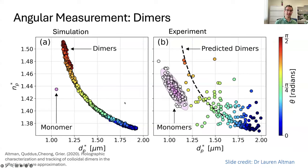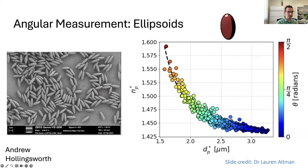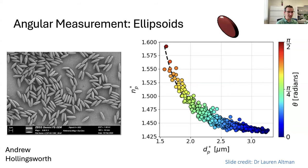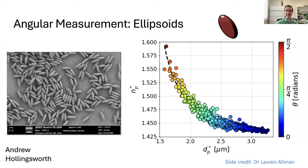After doing this with dimers, she also repeated it with elongated particles — tactoidal particles. On the left is an electron micrograph showing they look a little bit like E. coli, about two to three microns in length and maybe one micron in diameter. The same thing happens: you can make a direct map for the orientation of these particles and the out-of-plane angle based on these holograms.